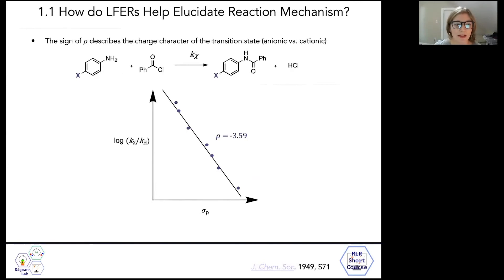One example is the benzoylation of substituted aniline derivatives. The mechanism of this CN bond forming reaction seemingly has very little in common with the ionization of benzoic acids, but Hammett analysis is still useful on this system to understand the reaction mechanism. Particularly, this analysis demonstrates that the sign of rho describes the charge character of the transition state of a reaction. In previous examples, rho has been positive since electron withdrawing groups, which have positive sigma values, stabilize the anionic carboxylate.